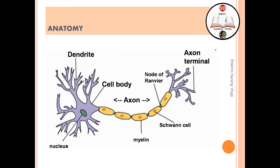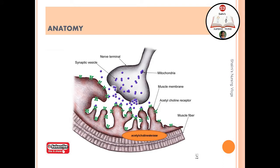Before discussing the pathological changes seen in myasthenia gravis, let me brief you on neuron anatomy. This is a neuron with the cell body, dendrites, nucleus, axon, and axon terminal. One individual axon terminal will innervate a single muscle fiber, except in ocular muscles where multiple axon terminals innervate that area. This is the presynaptic area, the terminal button, the synapse, and the post-synaptic area.